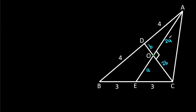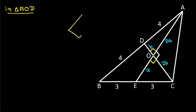Now, we have angle AOC is 90 degrees. So angle AOD will also be 90 degrees. AO is 2a, OD is b, and AD is 4. In the right triangle AOD, by the Pythagorean theorem, 4a² + b² = 16.